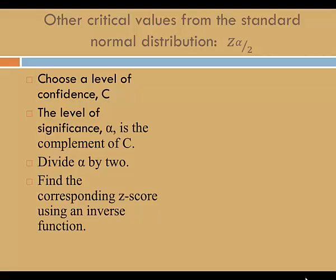The level of significance, alpha, is the complement of c, so 1 minus c. Divide alpha by 2. Then find the corresponding z-score using an inverse function.